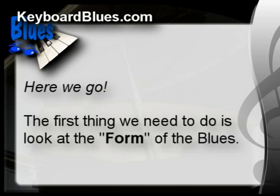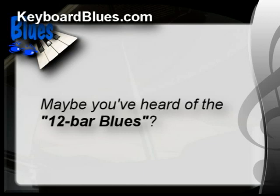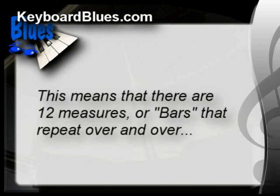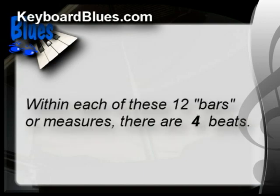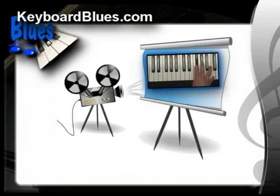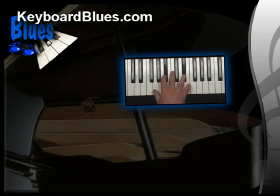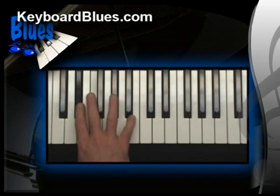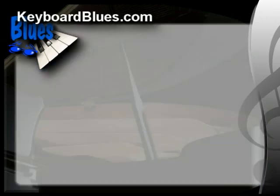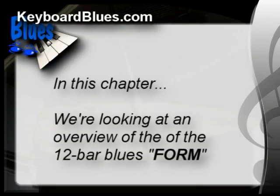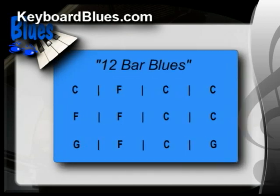The first thing we need to do is look at the form of the blues. Maybe you've heard of the 12-bar blues. This means that there are 12 measures or bars that repeat over and over. Within each of these 12 bars or measures, there's four beats. In the upcoming blues chapters, there's lots of video zoomed in up close at the keyboard level so you can see the details of what each hand and finger are doing. But at this point in the first chapter, we're not quite ready yet to look at specific chords or notes. Instead, we're looking at an overview of the 12-bar blues form — 12 bars or measures, each containing one chord. To help you keep track of where we are in the 12-bar blues, just follow the circle on screen — it'll follow along with what I'm playing on the piano.